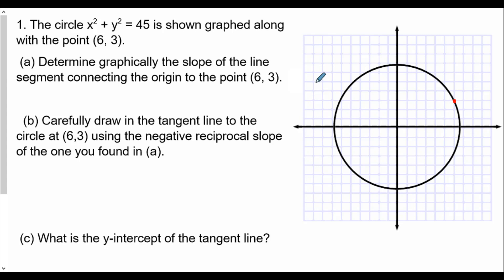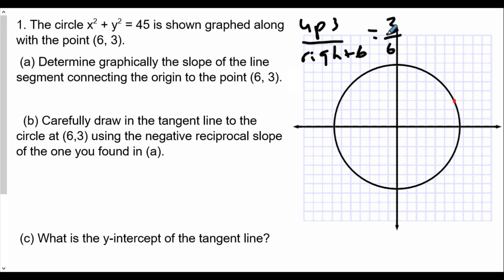We're determining the slope graphically by counting boxes up and across. From the origin we go up one two three and to the right one two three four five six — so up three and right six — which gives us a slope of three over six, which is one half. So the slope of this segment connecting the origin to the point is one half, and that segment is the radius.